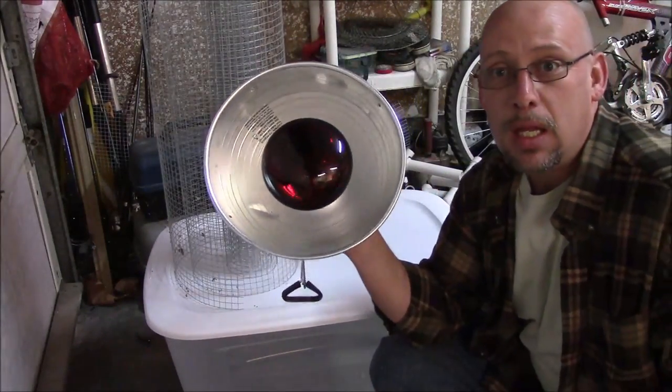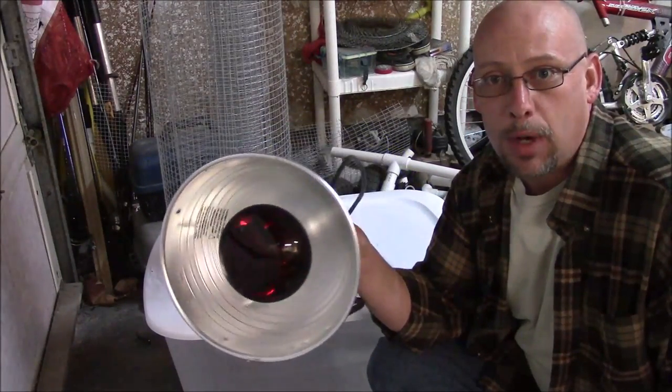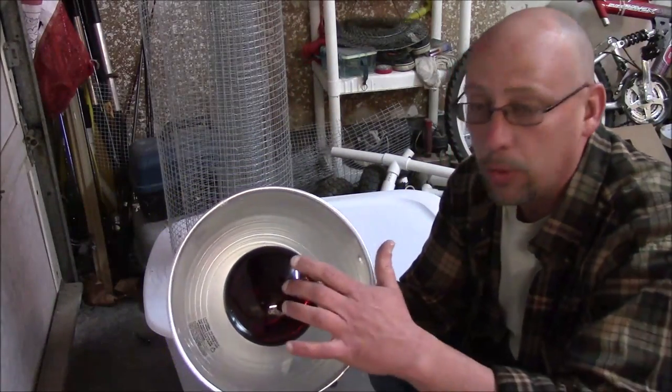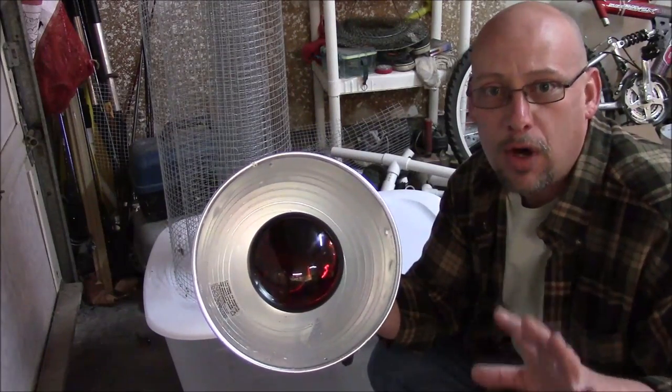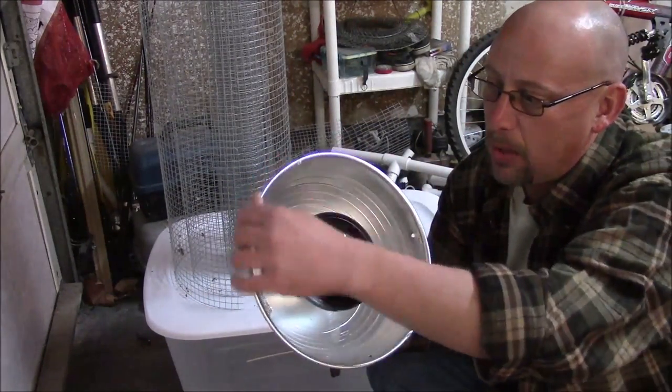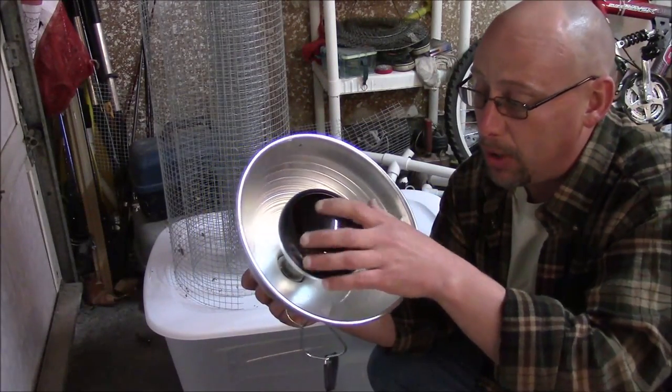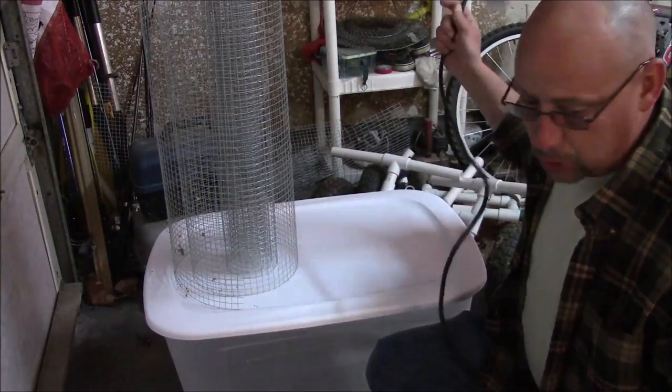The heat lamp I've got, you can purchase these in any feed store, probably Walmart, probably Tractor Supply, any of those places like that. I went ahead and went with the red bulb because the way I'm going to rig this up, this thing's going to be going on and off all the time. I think that red bulb probably disturbs them just a little bit less. So this is a 250 watt bulb. You could probably get away with slightly less, but I'm going to hook up a temperature control to this.